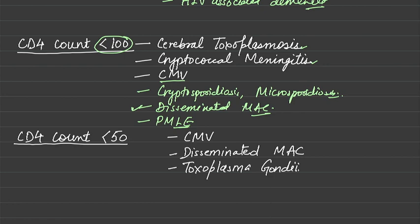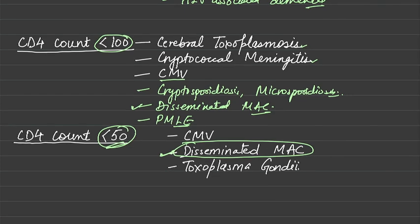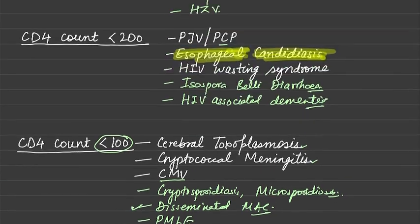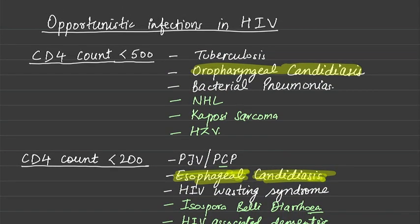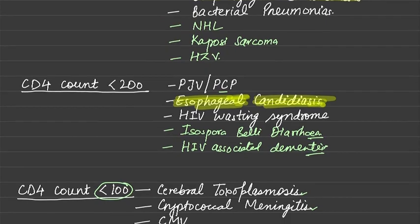Disseminated MAC occurs when the CD4 count is less than 100, but it occurs more prominently when less than 50. The other two infections common at CD4 less than 50 are CMV and Toxoplasma gondii. That covers all the opportunistic infections in HIV — thank you.